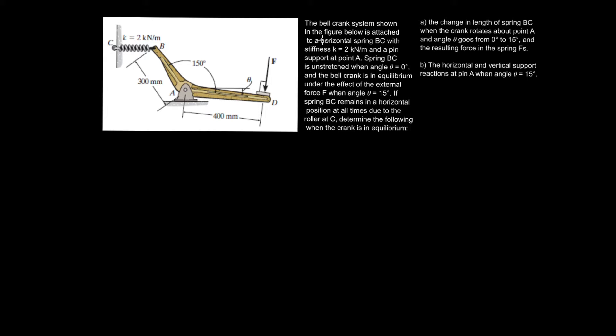So the bell crank system shown in the figure below, which is right beside here actually, is attached to a horizontal spring BC with stiffness k equals 2 kilonewtons per meter and a pin support at point A. Spring BC is unstretched when angle theta equals zero, and the bell crank is in equilibrium under the effect of an external force F when angle theta equals 15, and this is our theta here.